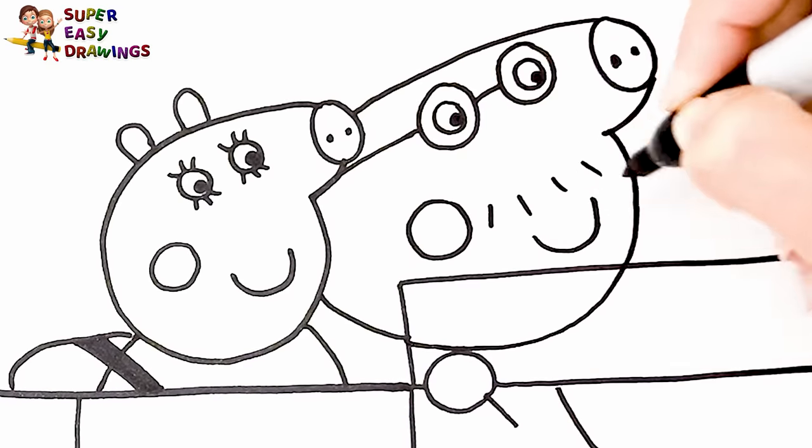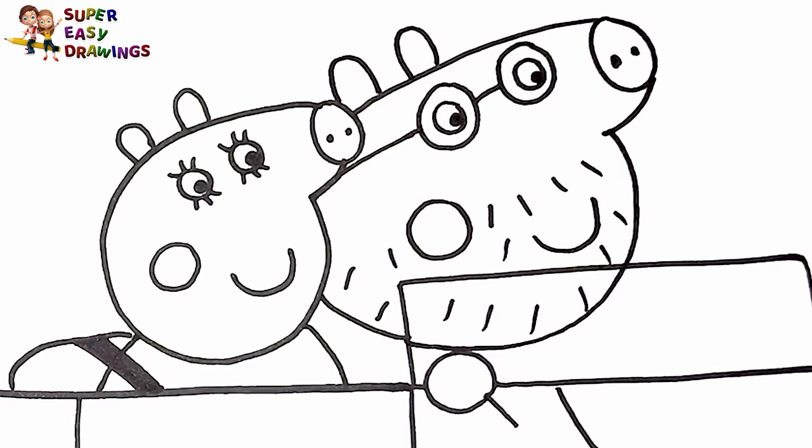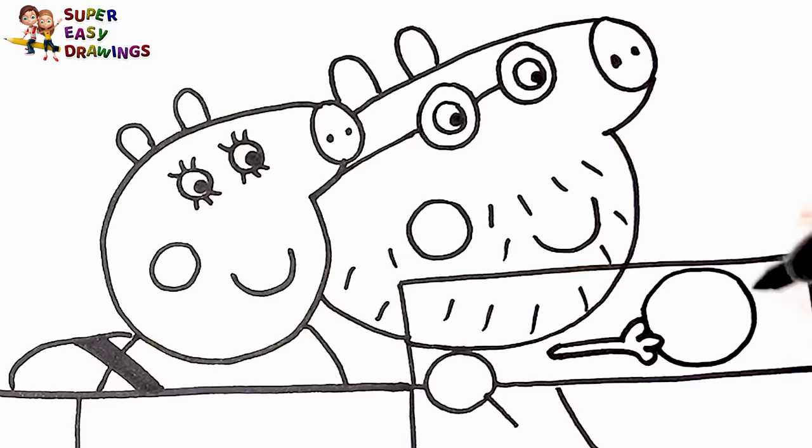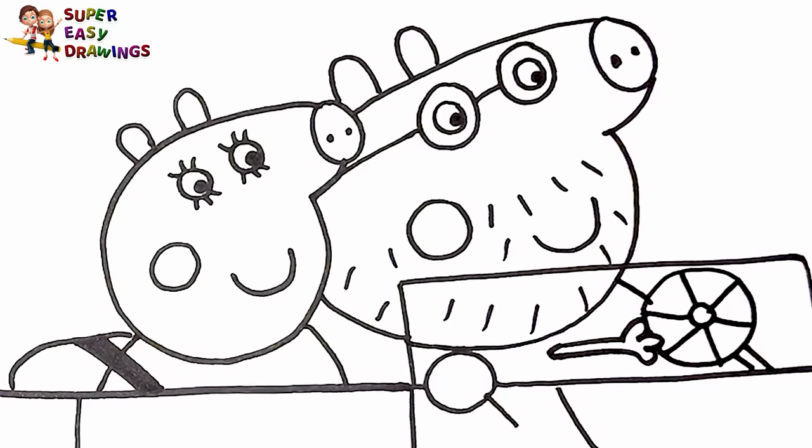And a circle for his cheek. He has a beard so let's add some lines like this. I continue with his body, his arm. Daddy Pig who drives the car. I continue with his big rounded body.